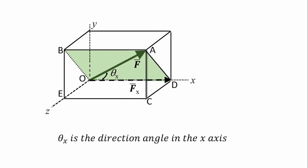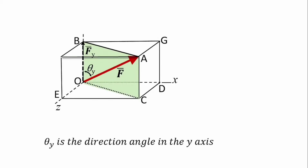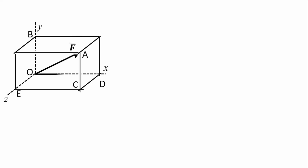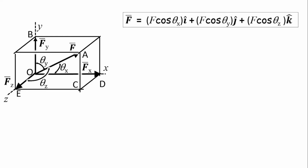This force makes an angle with the x axis, an angle with the y axis, and an angle with the z axis. These angles are called the direction angles of the force. There are three direction angles: theta-x with the x axis, theta-y with the y axis, and theta-z with the z axis. If these angles are known, one can easily calculate each force component by multiplying the magnitude of the force by the cosine of the corresponding angle — what is called the direction cosine.